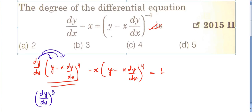The highest power of dy/dx across all terms: inside the first bracket the maximum power is 4, multiplied by the outer dy/dx gives dy/dx to the power 5. In the second bracket the highest power of dy/dx is 4. So the overall highest power is 5. The order is 1 and the degree of the given differential equation is equal to 5.